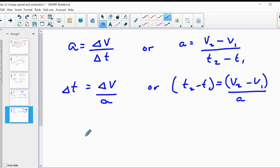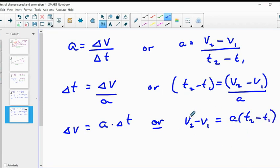And lastly, we should be able to write this in terms of our velocity. Our velocity would be A times delta T or that would be V2 minus V1 equals A times T2 minus T1. Once again, don't go memorizing. Learn how to do the algebra to manipulate your equations.